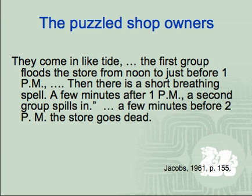Why is this happening? As Jacobs identifies it, the problem lies with the pulsing consumption manner. All demands on services concentrated over two to three hours a day at lunch break. A shop owner described it like this: they came in like a tide. The first group floods the store from noon to just before 1pm, then there is a short breathing spell. A few minutes after 1pm, a second group spills in. A few minutes before 2pm, the store goes dead. The solution for a viable economy is to have temporal niche differentiation — that is, to have the populations using the services at different times of the day.